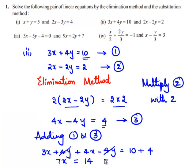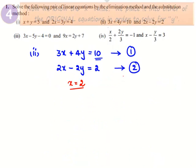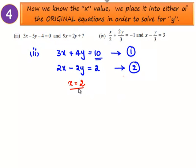This becomes 7x is equal to 10 plus 4, which is 14. That implies x is equal to 14 divided by 7, which is nothing but 2. So the value of x is 2.